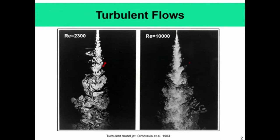As Reynolds number increases from about 2,300 to about 10,000, the small scales of the flow become smaller and smaller. That is actually a universal property of turbulence: as you increase the Reynolds number, the smallest scales become smaller and smaller, and the flow develops more and more fine-scale structures.